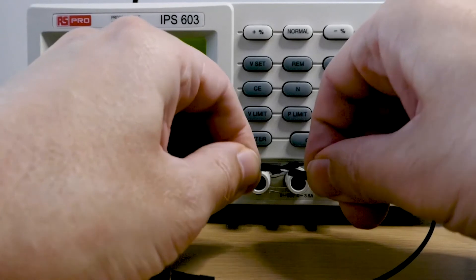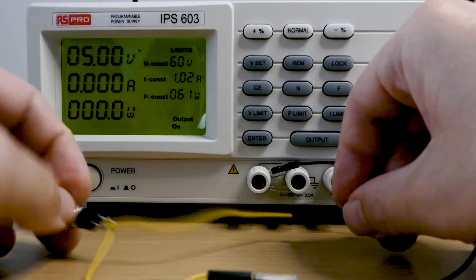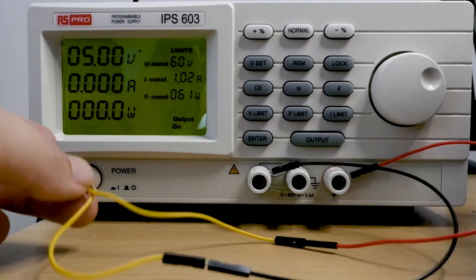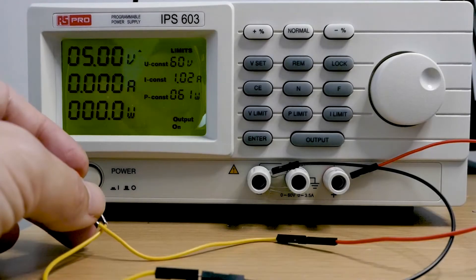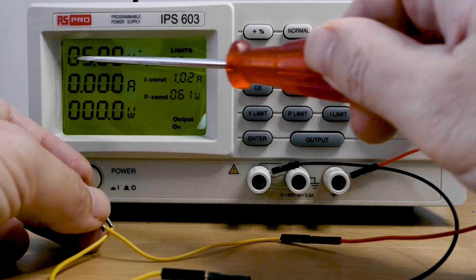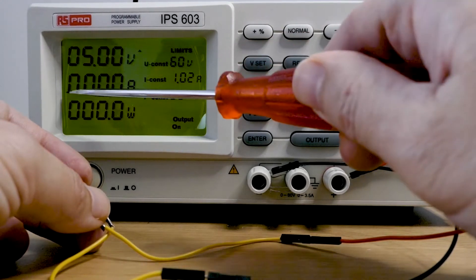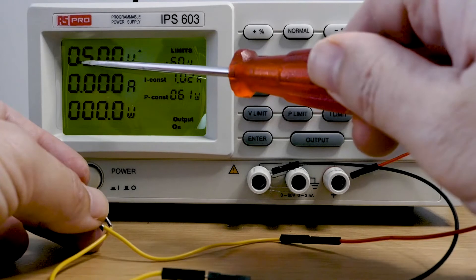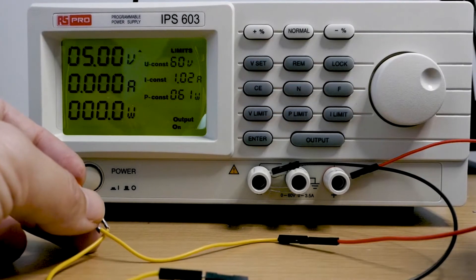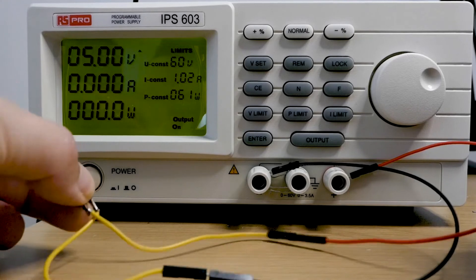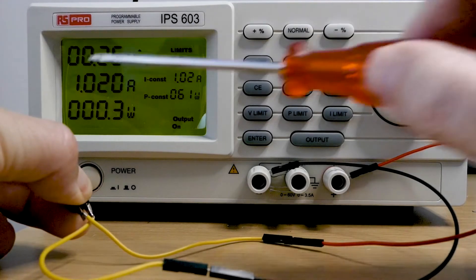Now when the switch is open, obviously there's no current because there's no external circuit. The minute I press it, what's going to happen is the voltage is going to drop down and the current is going to increase. This really should say zero and this should become one amp. I won't do it for very long because it's very bad for the power supply.